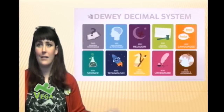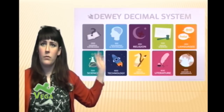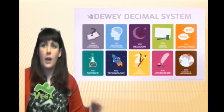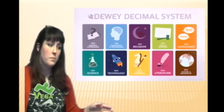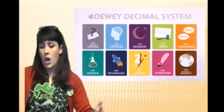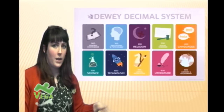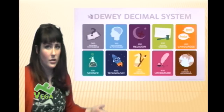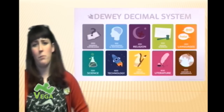He divided it into ten subject areas. Here you can see 000 — that's where all the general knowledge is going to go. 500 is where all the science will go. It goes into a bit more detail than that. Within science, it gets into even more specific orders. For example, anything beginning with 59 will be an animal or a living creature. 599 will be all the mammals. And then it gets to decimal points — so 599 point something will be monkeys.